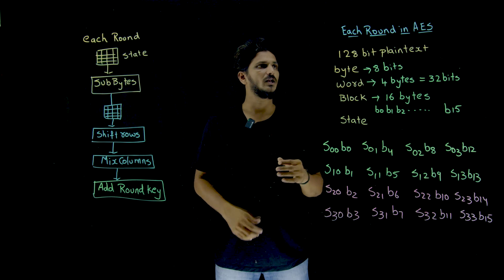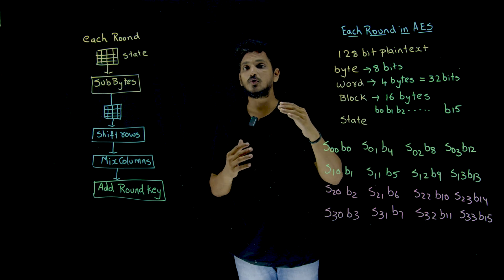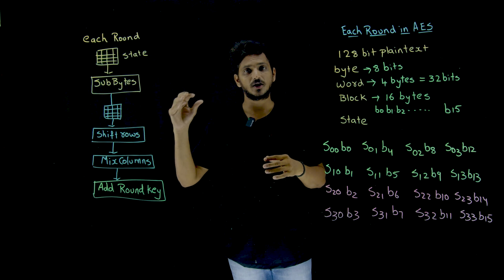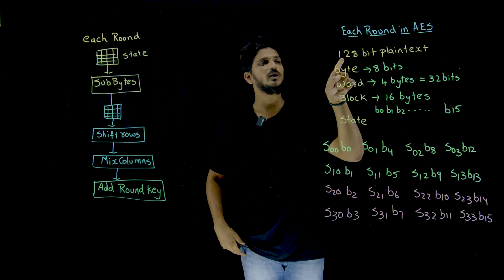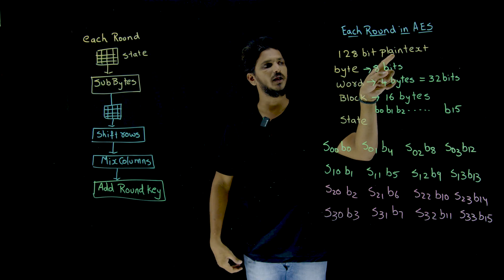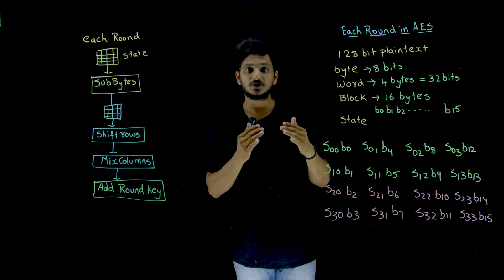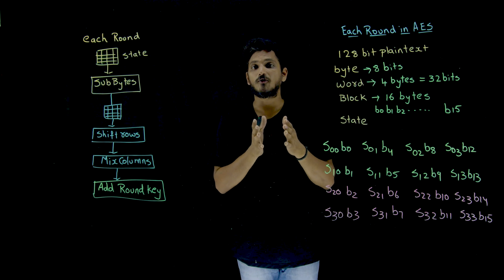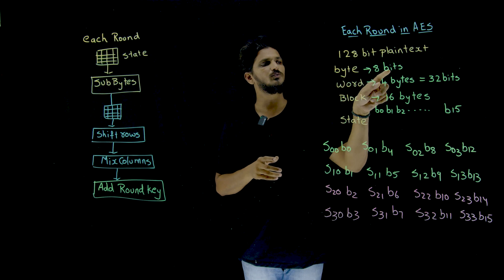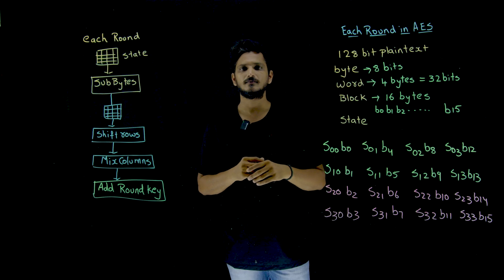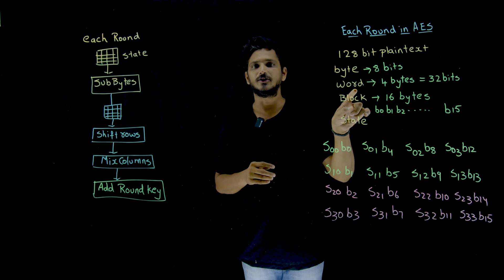Coming to today's class, before we move on to what happens inside each round, let's try to understand some terminology. We are going to use 128-bit plain text. In AES, that plain text is divided in the form of bytes. 8 bits we call it as a byte, and 4 bytes we call it as a word.